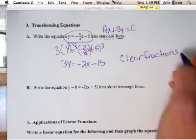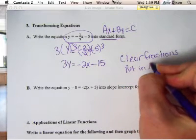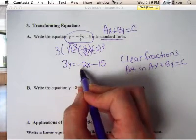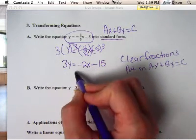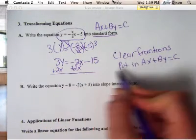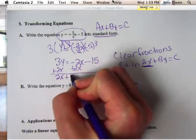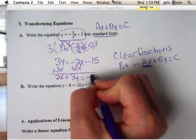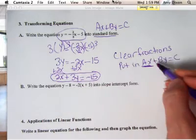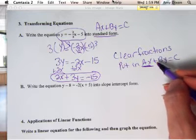The second step is to put it in ax plus by equals c form. That means we need to get this x term to the other side — add 2x to both sides. Then we write the x term first because ax comes first. So we do 2x plus 3y equals negative 15. Now this equation is in standard form. First, clear your fraction; then put it in that format.